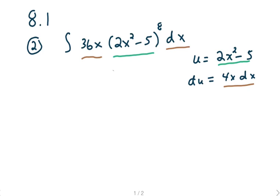And this problem's almost set up perfectly. We certainly have the 2x squared minus 5. Now we need 4x dx, and we have 36. But we can take care of that pretty easily.